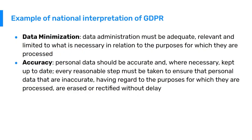Data minimization: the data administration must be adequate, relevant, and limited to what is necessary in relation to the purposes for which they are processed. Accuracy: personal data should be accurate and where necessary kept up to date. Every reasonable step must be taken to ensure that inaccurate personal data are erased or rectified without delay. This is often under-recognized in DHIS2 implementations, where individuals who have consented to be registered have an expectation that their data will be accurate. A key part of any privacy and security plan should include steps for rectifying duplicates, updating incorrect information, and removing inaccurate data.